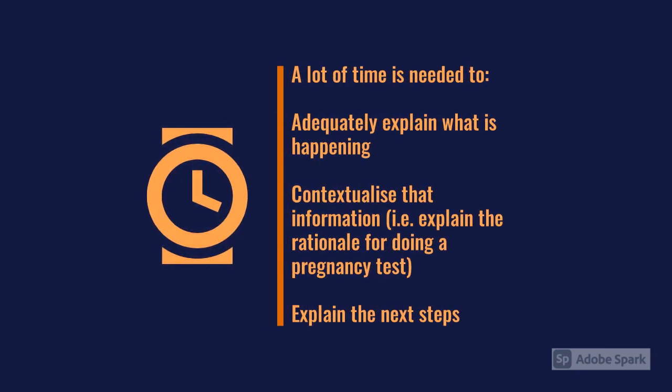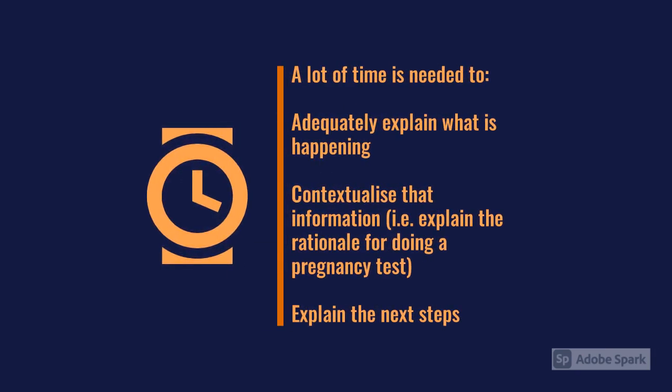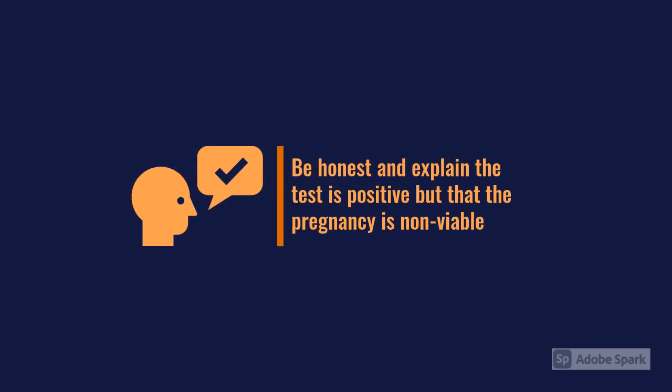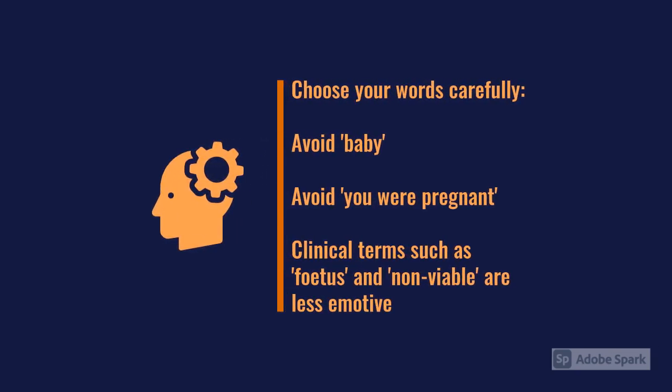One approach is to say: 'You've come in with abdominal pain and bleeding. Based on the fact that you are of childbearing age, one of the things we need to rule out is whether there has been a pregnancy causing these symptoms. This is part of our testing and screening process. We've done this and it has found that you have a positive pregnancy test. However, with these symptoms, it may be that the pregnancy has implanted somewhere outside of where it should be and therefore is not a viable pregnancy.'